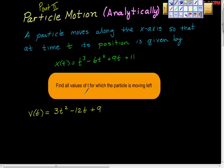So it says find all values for t for which the particle is moving left. So if it's moving left, then velocity is negative. So when I saw left, when I saw left here, left to us is negative velocity. So negative velocity here is really helpful.